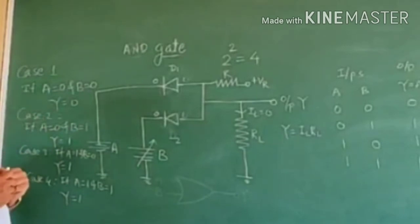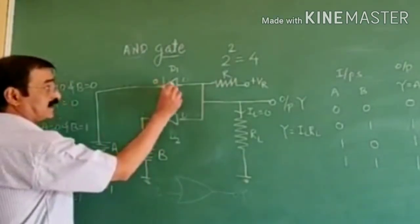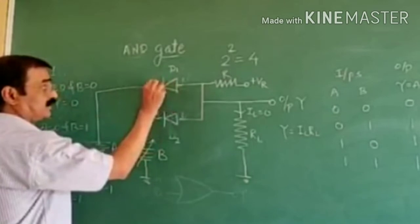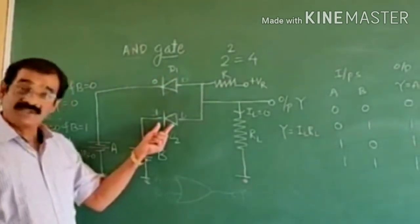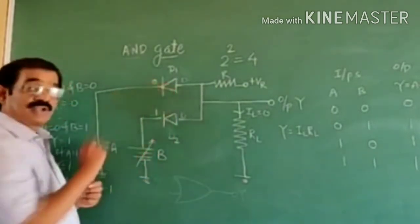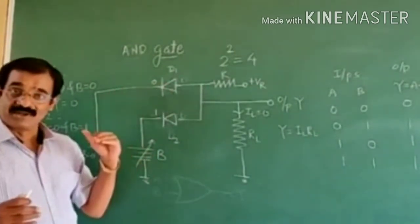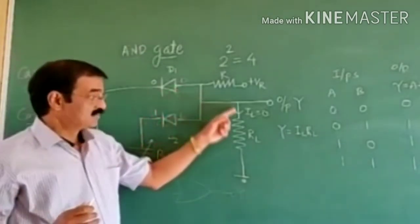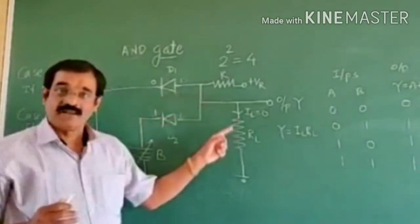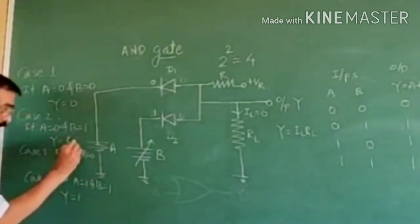Case 2: if A is equal to 0 and B is equal to 1. At the cathode of diode D2 there is high voltage, and at the anode of diode D1 there is low voltage. In this case D2 becomes reverse biased and D1 becomes forward biased. So the current flows through diode D1 towards ground. Again no current flows through the load resistance RL — IL is 0 and we get output voltage Y equal to 0.